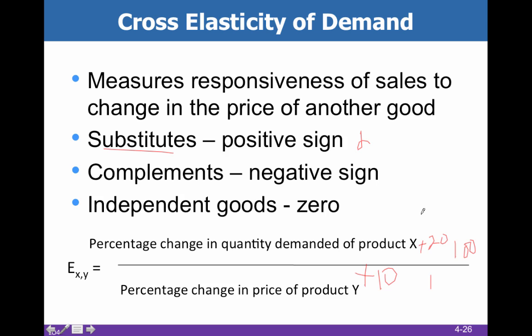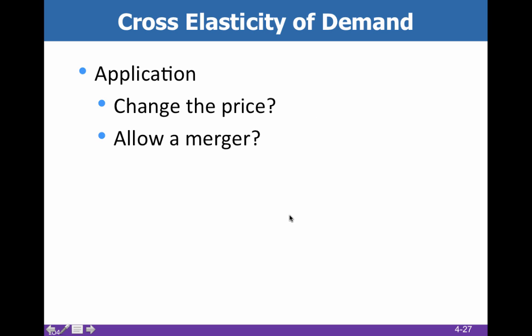We can do the same thing for complements. When the price of peanut butter goes up 10% and the quantity demanded of jelly goes down 20%, you have a negative 2. That negative sign tells us they're complements. The higher the absolute number, the more complementary the two things are.